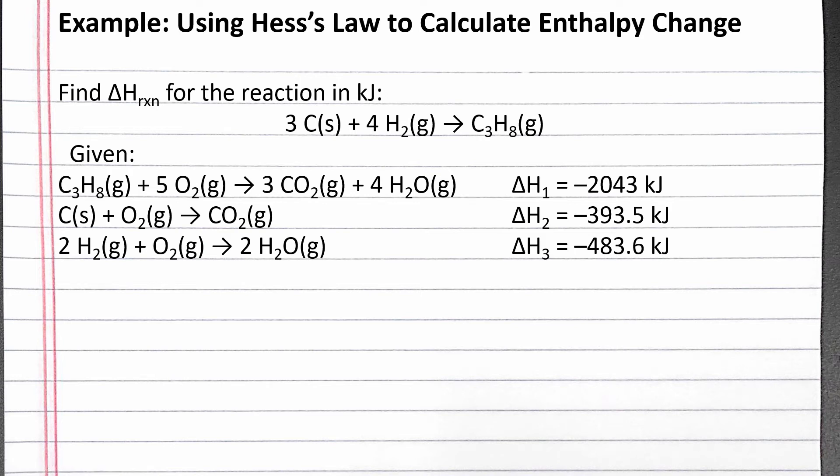In this example, we use Hess's law to calculate the change in enthalpy for a reaction. Our problem reads: find the change in enthalpy for the reaction in kilojoules, given these three reactions and their enthalpy changes.